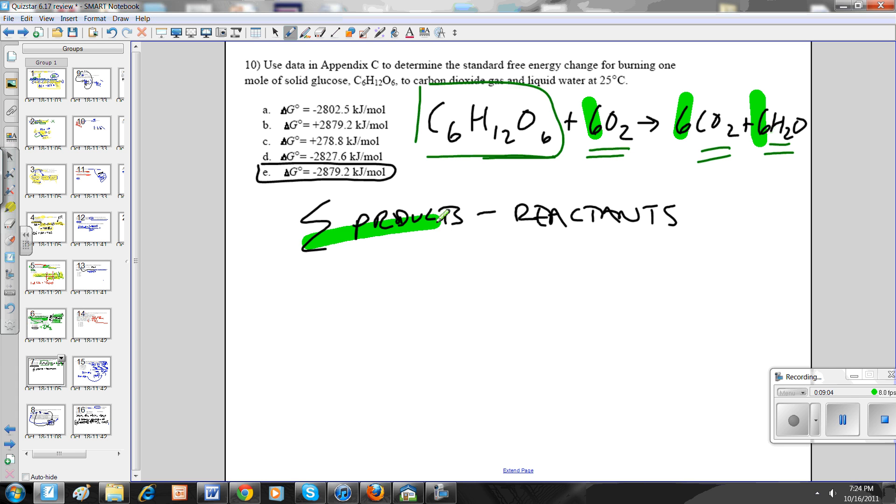So this one is products minus reactants again. You just look up the delta G values. If you remember, delta G elements don't have a value. So you look up the value for CO2, look up the value for H2O multiplied by 6, you get your products minus the reactants, the value that you can look up for glucose, and you're good to go. Products minus reactants, that's just some simple calculations. All you do in that case is products minus reactants and look up the value. Biggest issue you guys have with that is actually balancing the equation.